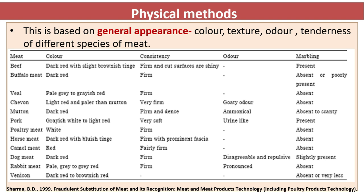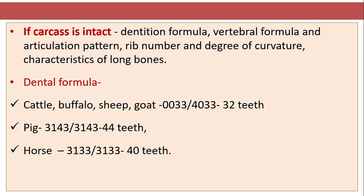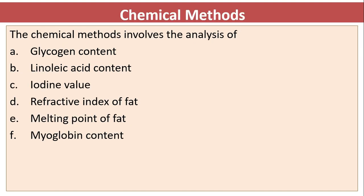Physical methods are based on general appearance such as color, texture, odor, and tenderness of different species of meat. General characteristics include body fat color, marbling, and firmness of fat. If the carcass is intact, dentition formula, vertebral formula, articulation pattern, rib number and degree of curvature, and characteristics of long bones are considered. Some dental formulas are listed below.